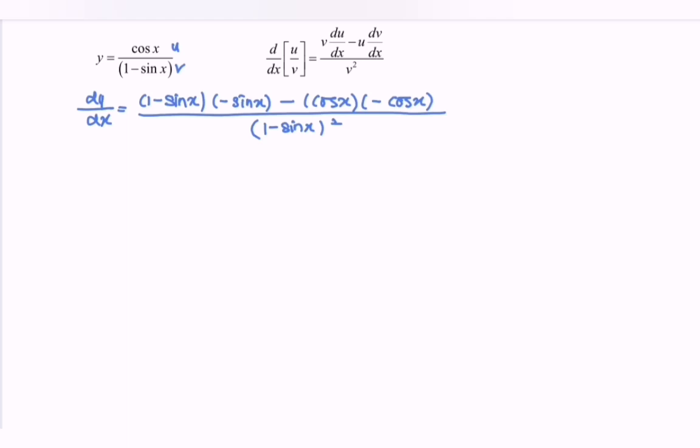So try to simplify the situation. So if we expand, we will have dy dx is equal to negative sin x plus we have sin square x plus we have the cos square x over 1 minus sin x bracket square.